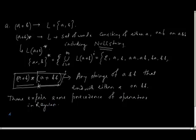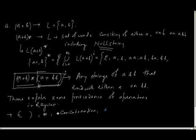What is the precedence? First, brackets — as in normal mathematical expressions — have the highest precedence. Then comes the star operator. Then comes the union. Then comes the concatenation. And then comes the union plus.